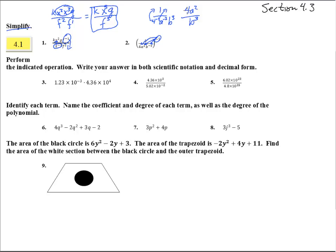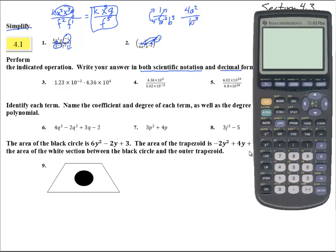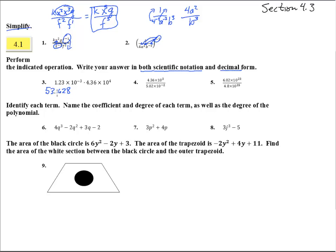Number 3 — it says write your answer in both scientific notation and decimal form, so we've got to do it in both. Let's get out our calculator. 1.23 times 10 to the negative third power times 4.36 times 10 to the fourth. We get a decimal of 53.628. In scientific notation, we just need to move the decimal one place, so that is 5.3628 times 10 to the first. That's the answer in both ways.